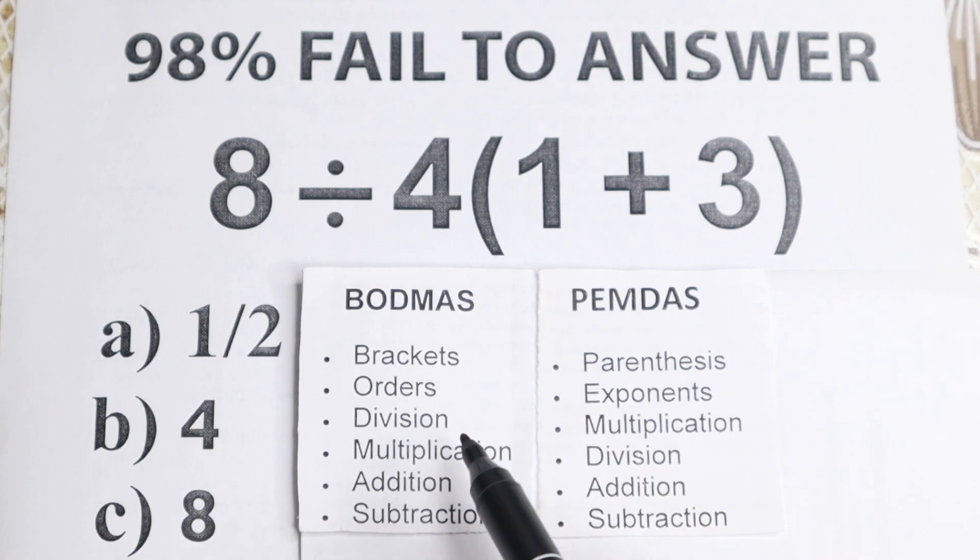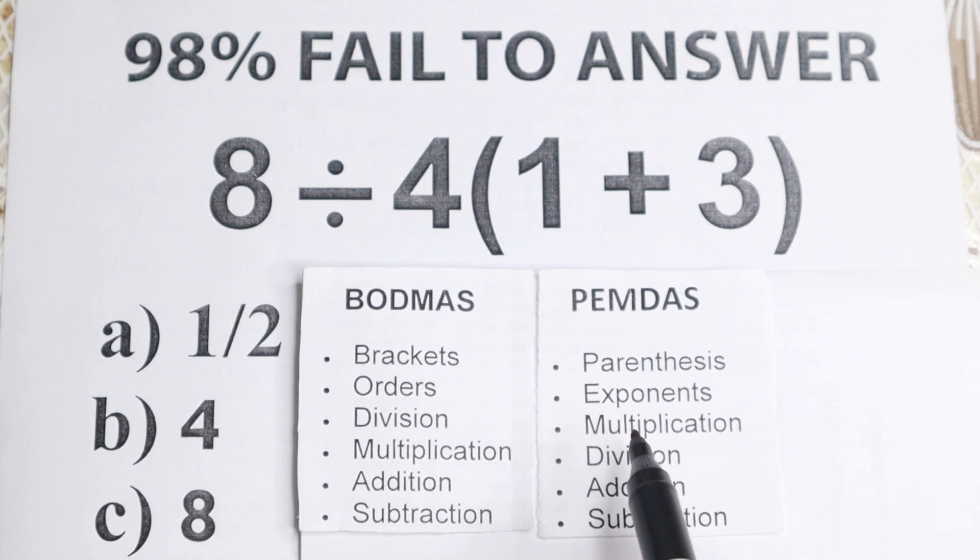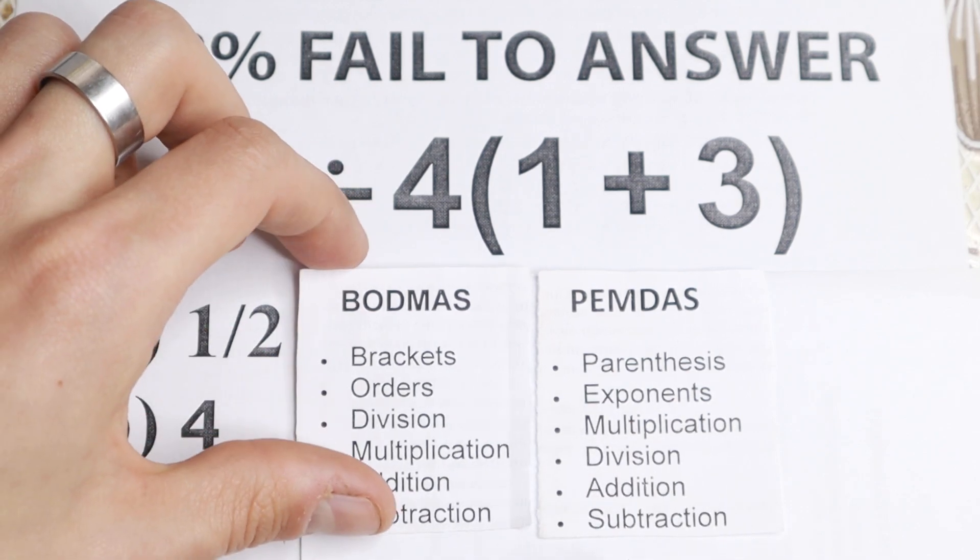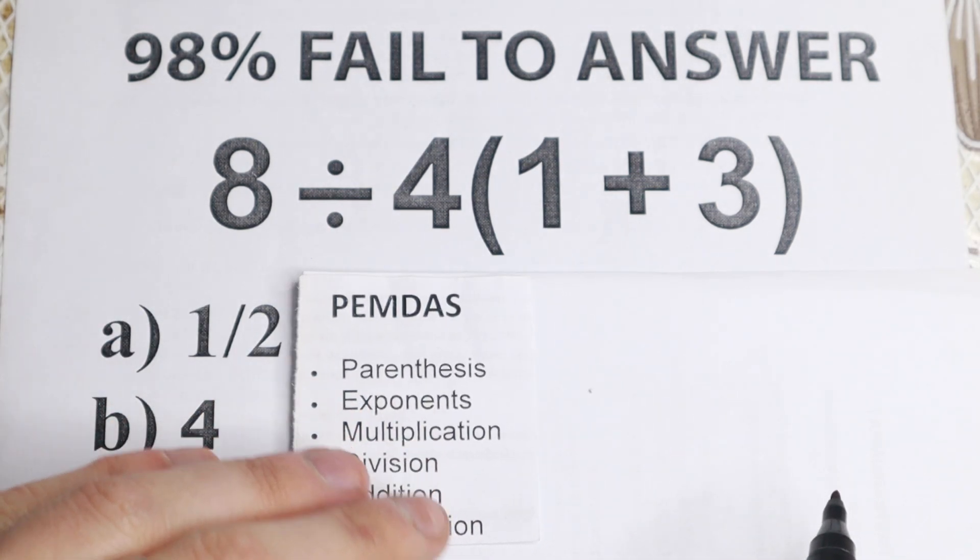So I want to answer, BODMAS is the old one because this method is 100 years old, and PEMDAS, this is the most popular order of operation nowadays. A lot of internet libraries, scientific calculators, graphing calculators work according to PEMDAS, so we take away BODMAS and we have PEMDAS order of operation.